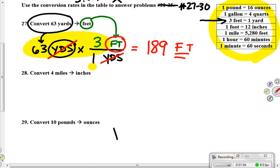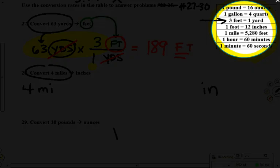28. What you start with, put on the left. Four miles. Where you want to finish goes on the far right. We want to get it to inches. As you look through this chart, over here on the right, is there a direct relationship between miles and inches?